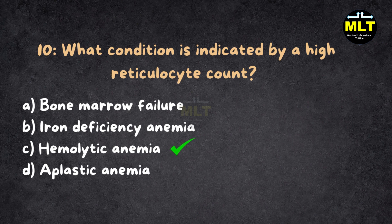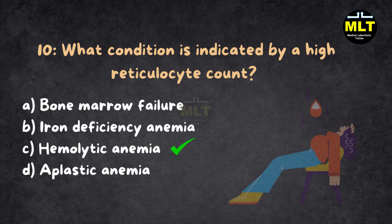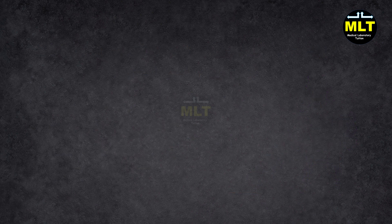Correct answer: C. Hemolytic anemia. Explanation: A high reticulocyte count suggests increased RBC production, often seen in hemolytic anemia where RBC destruction is accelerated.